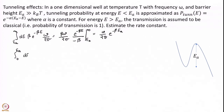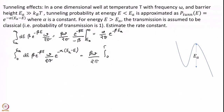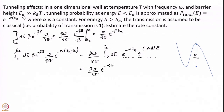Now the first part — the tunneling integral from 0 to Ea. Beta omega over 2 pi times e to the power of minus alpha Ea times the integral of e to the power of (alpha minus beta)E dE from 0 to Ea. I separate the constant e to the power of minus alpha Ea out and combine the E-dependent terms. Integrating gives beta omega over 2 pi times e to the power of minus alpha Ea times e to the power of (alpha minus beta)E over (alpha minus beta), evaluated from 0 to Ea.